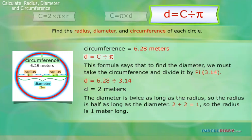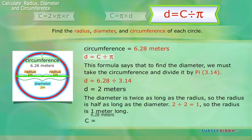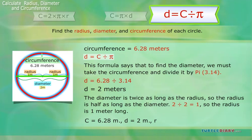And this answer makes sense. If halfway across the circle is 1 meter, all the way across is 2 meters. Final answer: C equals 6.28 meters, D equals 2 meters, R equals 1 meter.